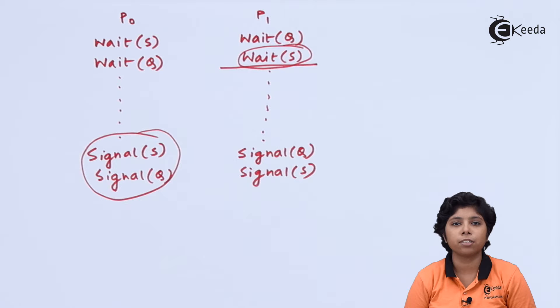The event with which we are talking about is generally resource allocation and relocation. Now another problem with this deadlock is the indefinite blocking or starvation.